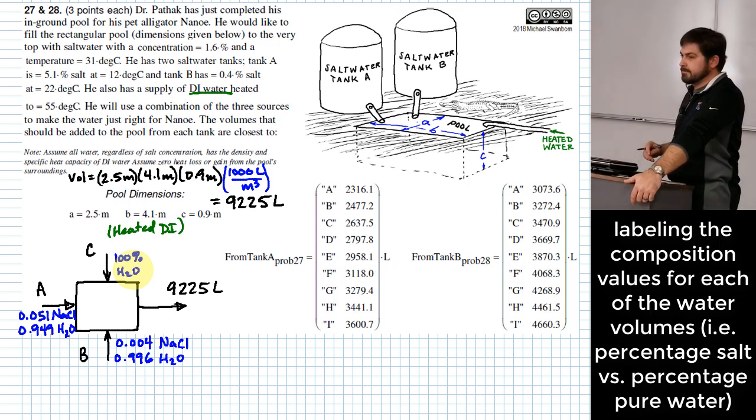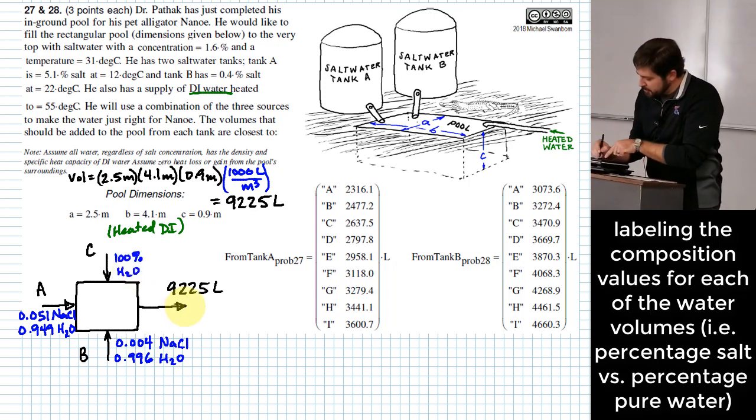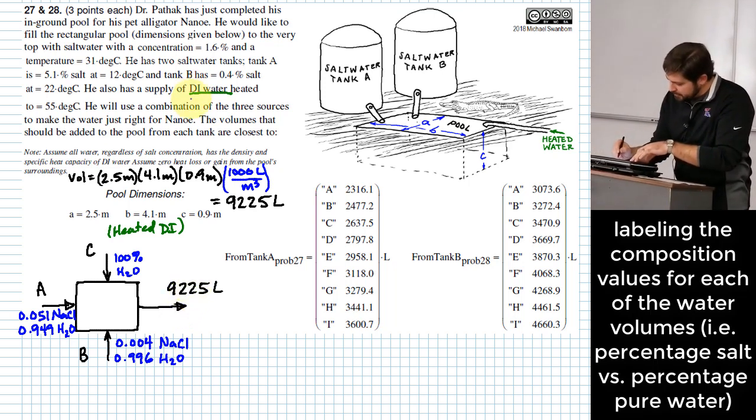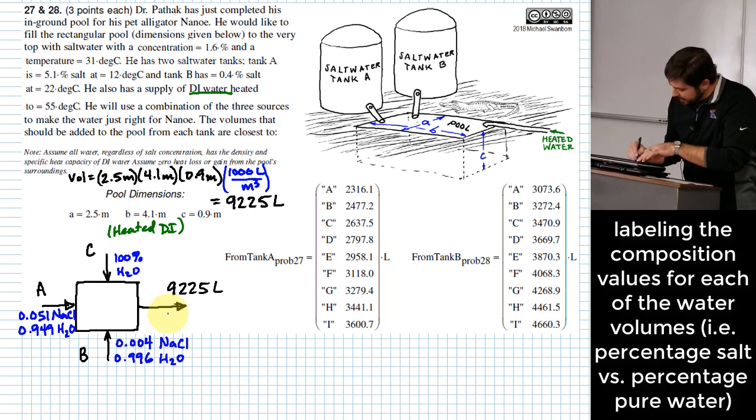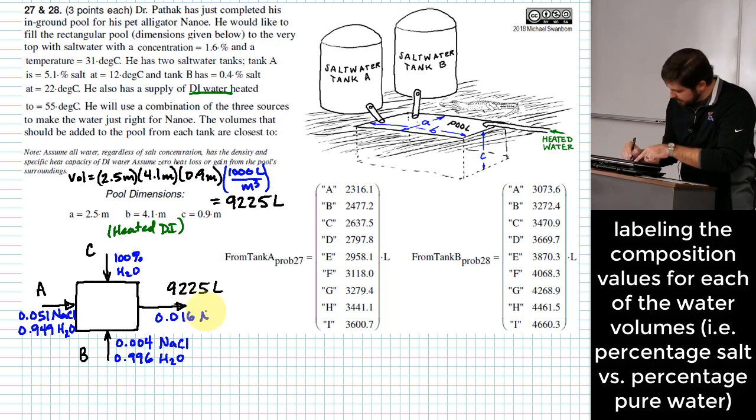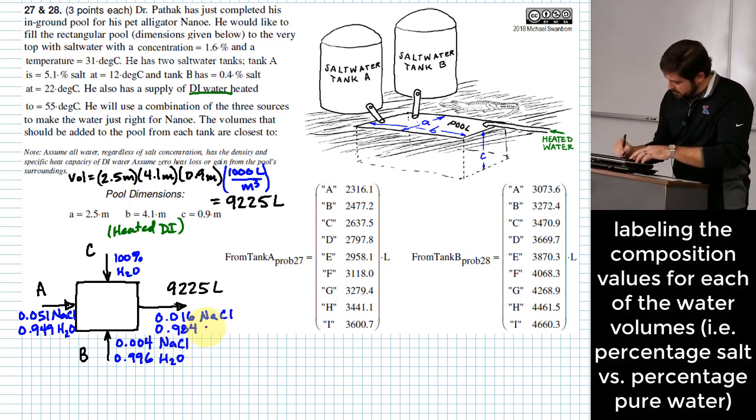It says he has a supply of DI water heated to 55 degrees C. So heated DI. That means this is 100% water. What else? We also know what composition we want for our final charge. The composition is going to be 1.6% salt. So 0.016 NaCl. And then that leaves 0.984 H2O.